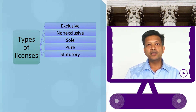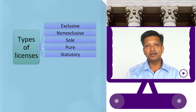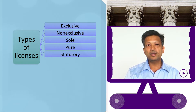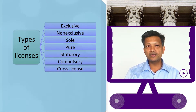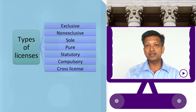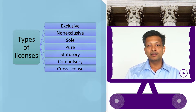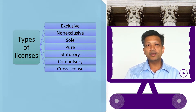A statutory license is one where the statute itself grants a license on fulfillment of certain conditions which it lays down. We have also seen what is a compulsory license — for example, the patent law allows or creates a mechanism for the issuance of a compulsory license in case of public health emergencies. These are the important types of licenses.